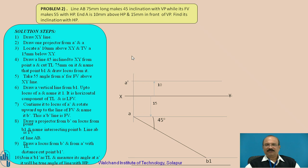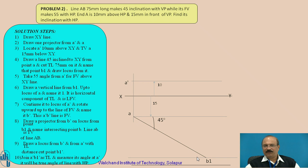Now, a 45 degree angle is given — 45 degree inclination with the VP. Keeping A as the position, use a protractor to draw this angle at 45 degrees in the downward direction. The length is given as 75 millimeters. From this point, draw the extended line as 75 millimeters. That is the location of point B1.